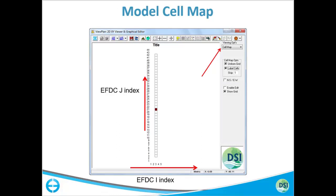In the EFDC model, each cell has an I and J index — that is how EFDC keeps track of which cell is which. Based on I and J, cells are also represented by an L index, a single index. For example, if you have 100 cells, the number of L's will be 102. The cell at the top has an I index of 3 and J index of 42, so I=3 and J=42 refers to that cell.